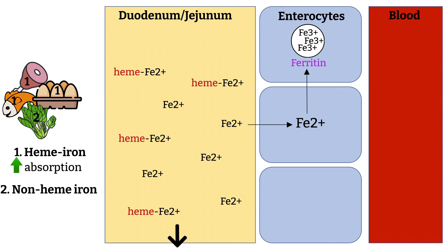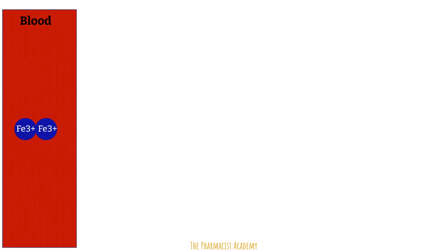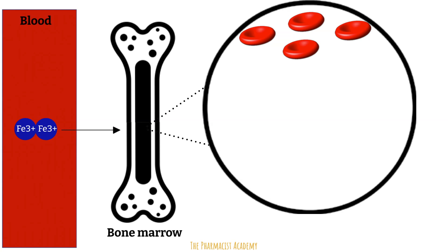The second thing that could happen to the iron within the cell is that it moves into the blood and is oxidized to ferric iron. Then it binds to a protein called transferrin, which will take it to its site of action — the bone marrow. When the iron gets there, it moves into the bone marrow where it is utilized as one of the ingredients to make red blood cells.